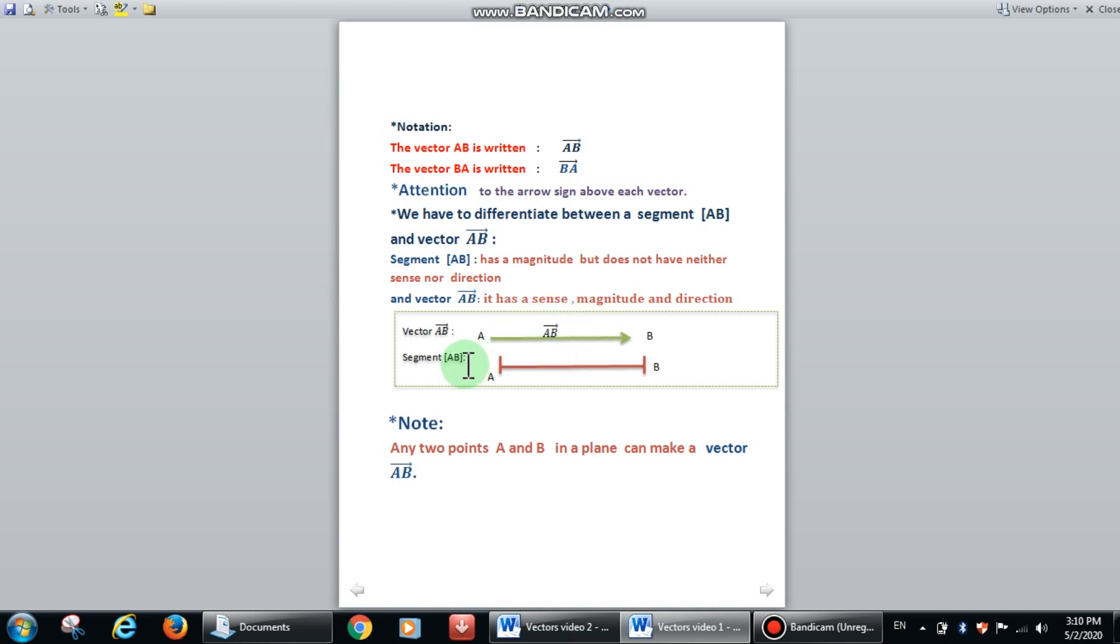Whereas segment AB, you can name it as segment BA. A and B are the points of segment AB.